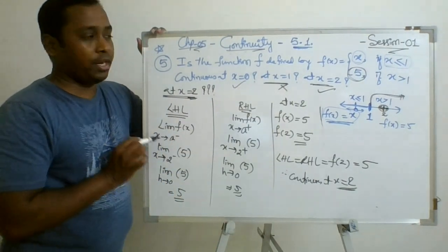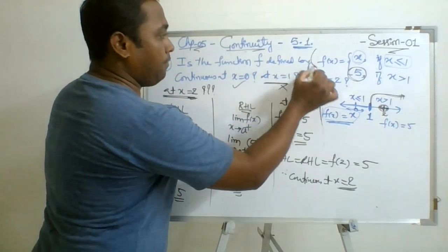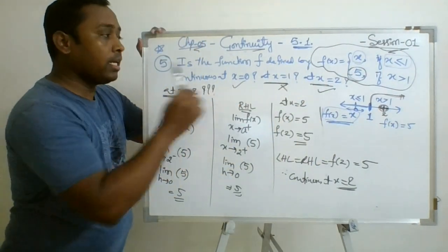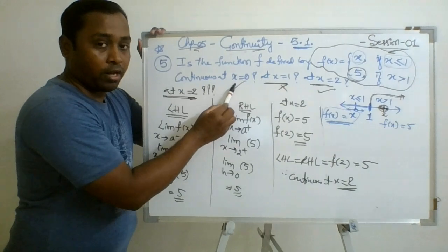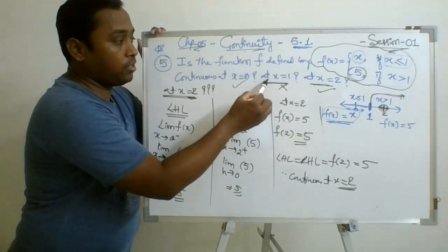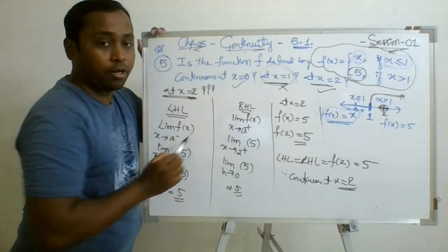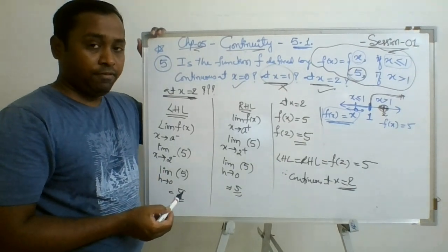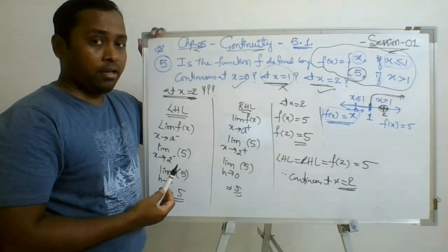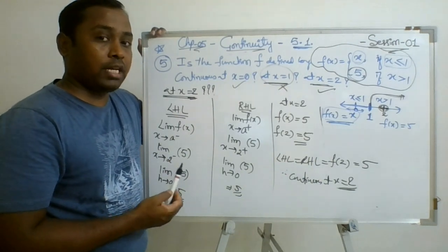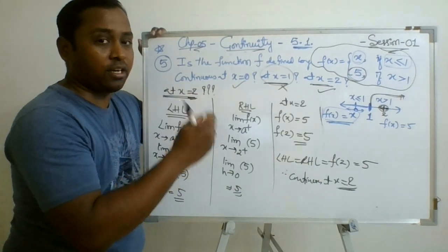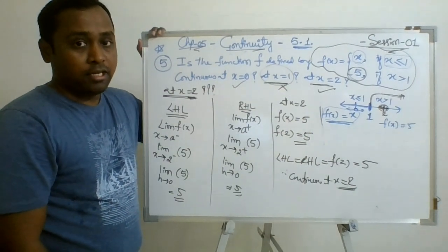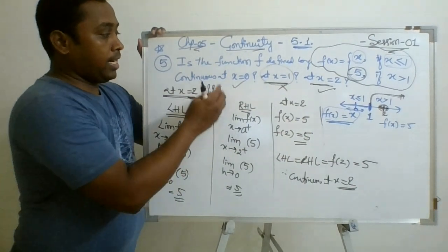So what we understood from this question: the same function may be continuous at one particular point but not continuous at another particular point. Whenever we discuss continuity, it is always at a particular point — not in the entire domain of the function. Remember this. Here at x equal to zero it is continuous, at x equal to 1 it is not continuous, and at x equal to 2 it is continuous. This continuity is checked by finding the left hand limit, right hand limit, and value of the function.